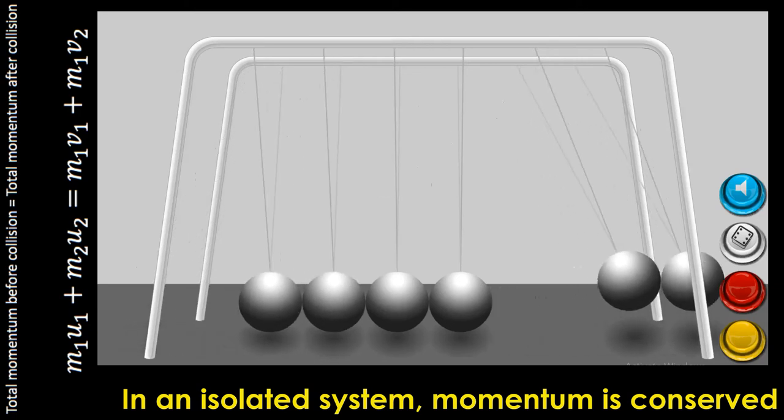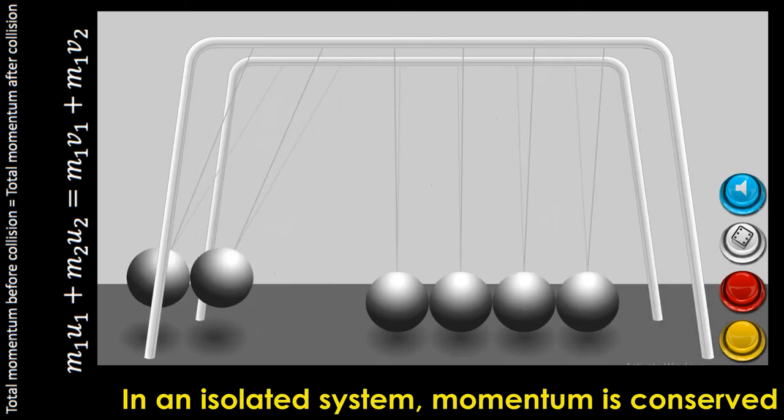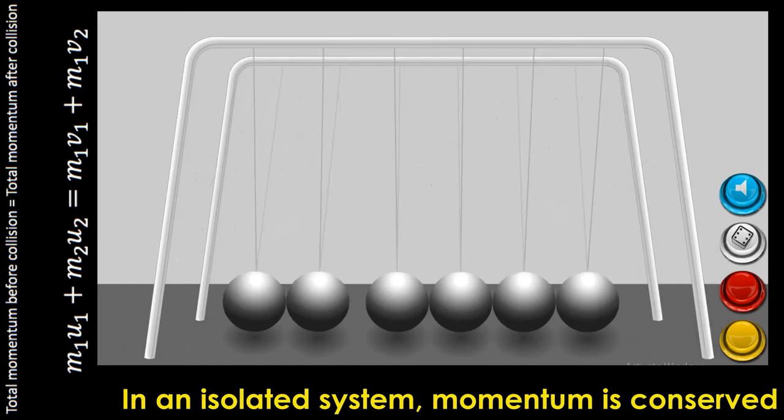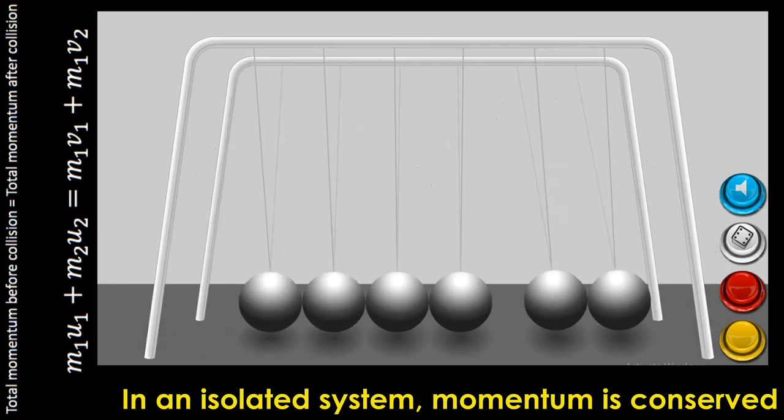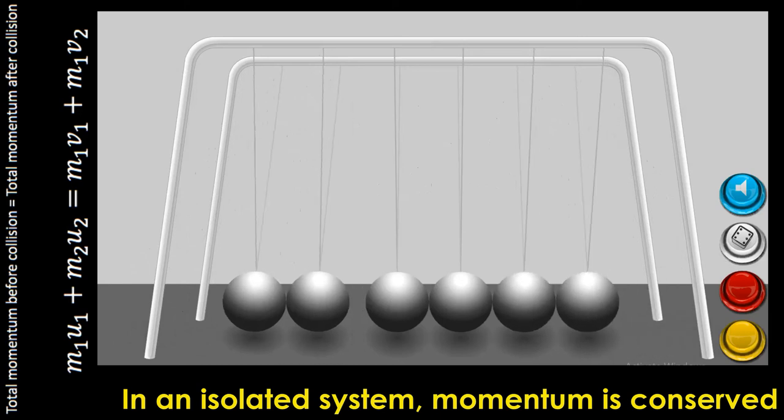According to the law of conservation of momentum, momentum before collision is equal to momentum after collision. So momentum is conserved.